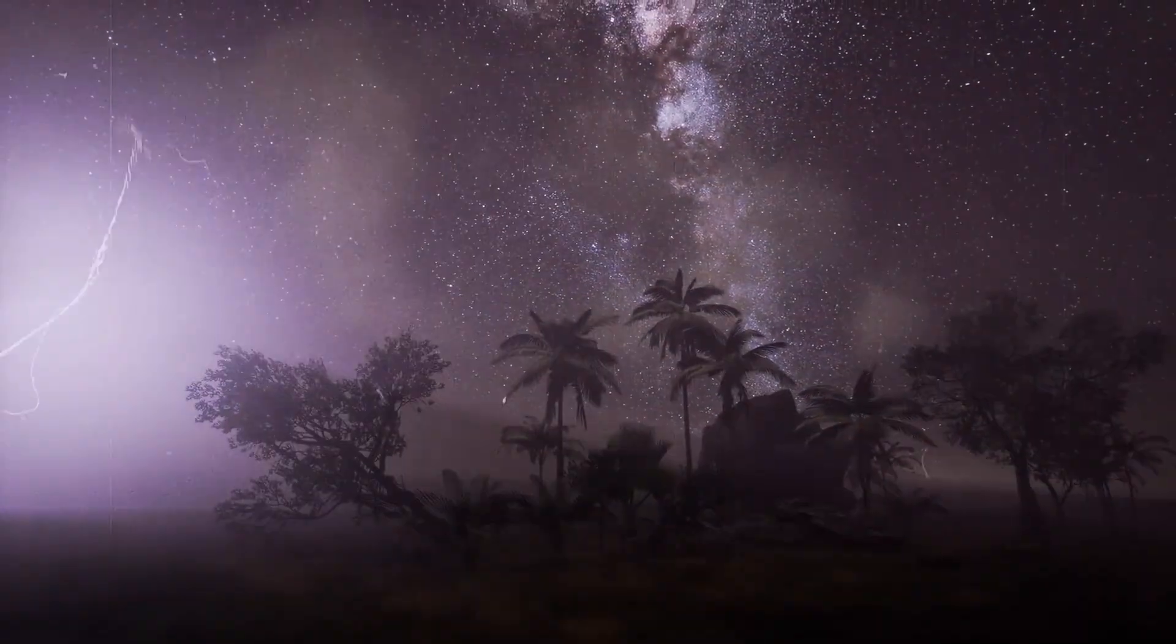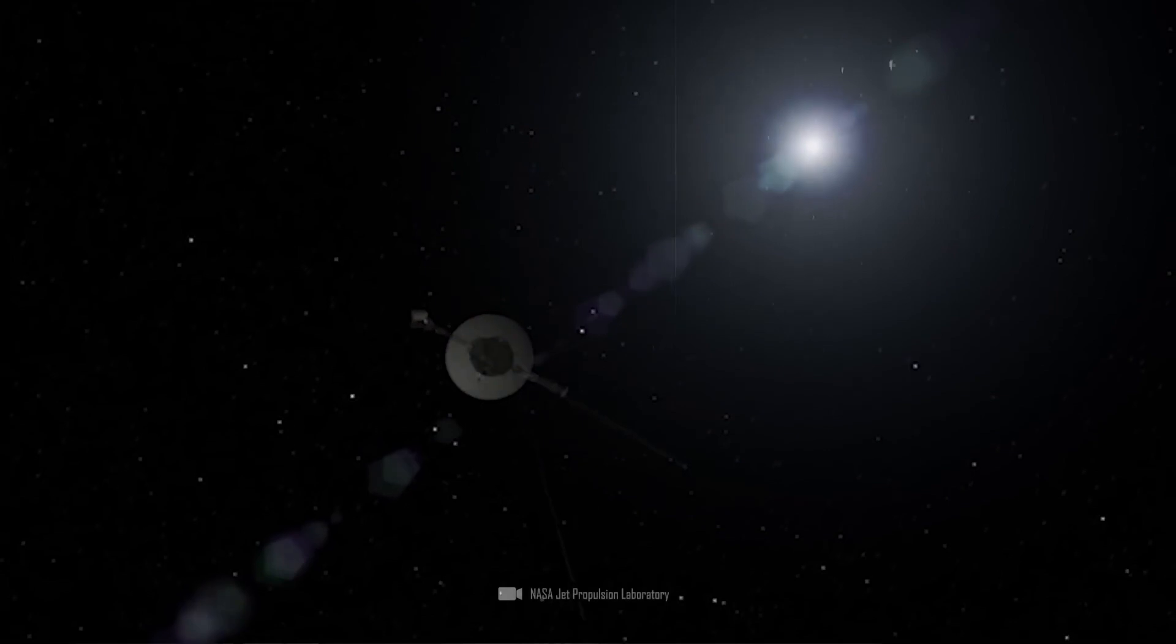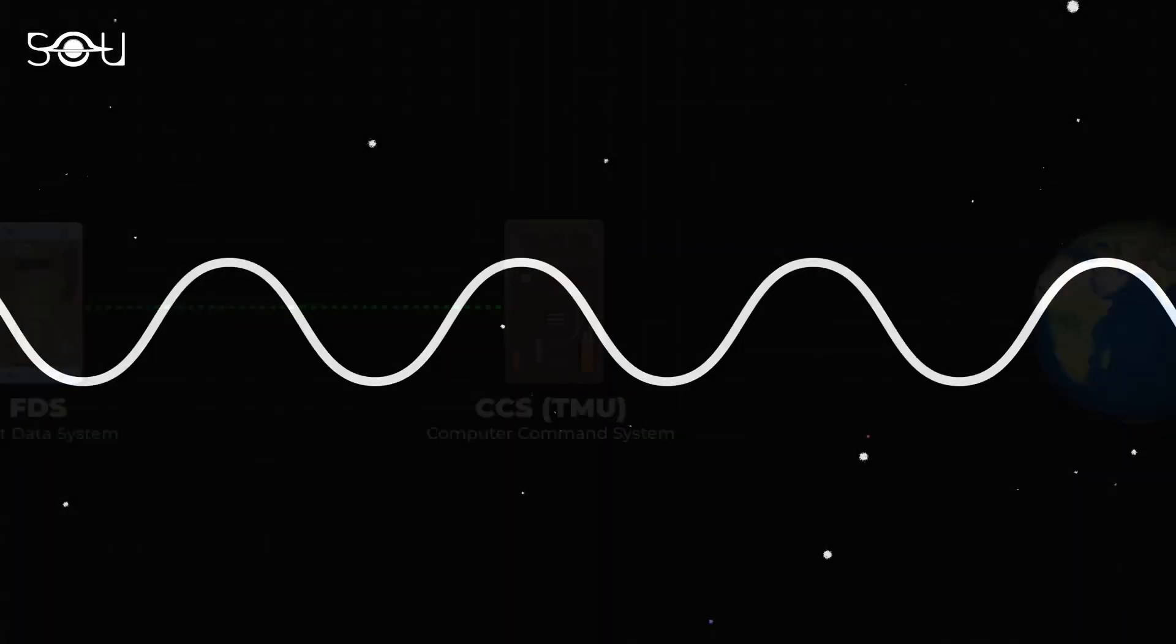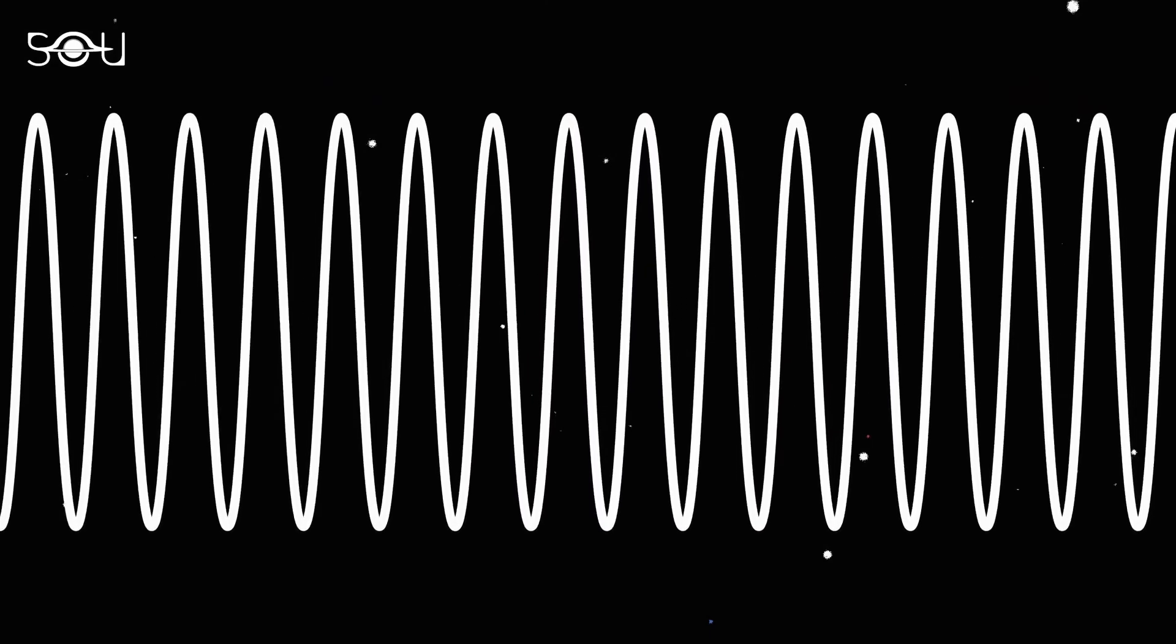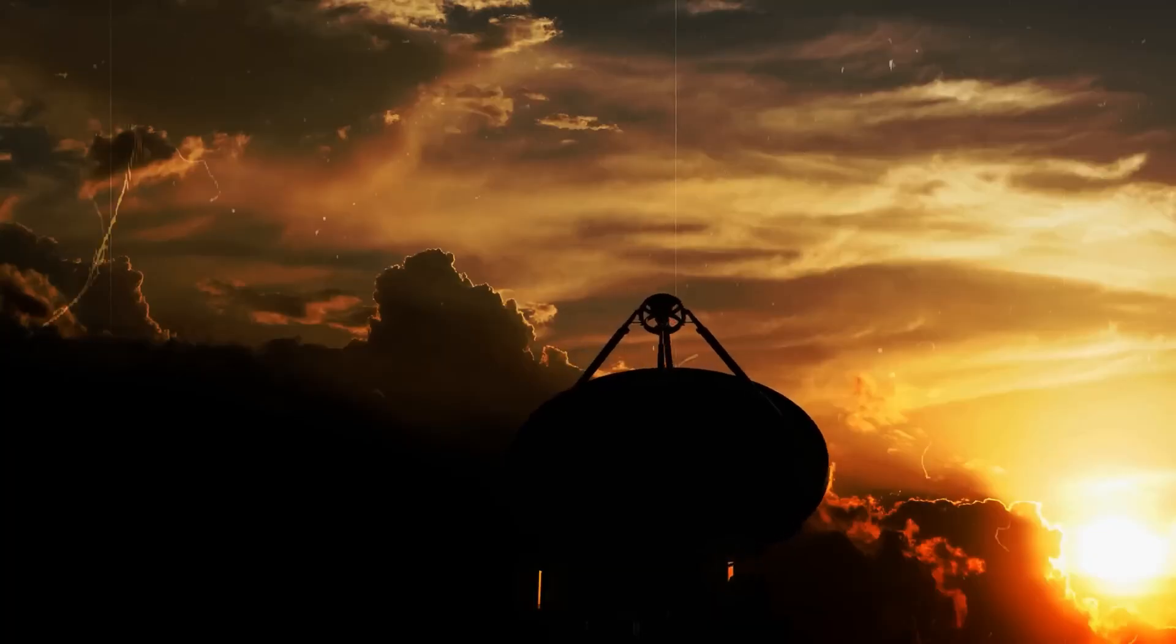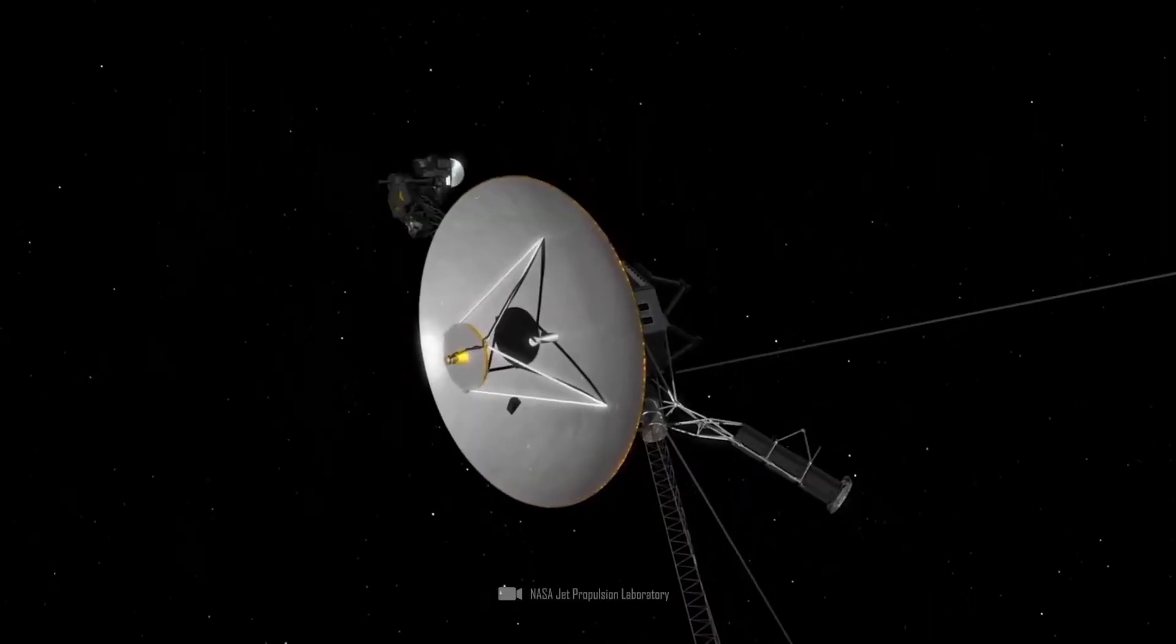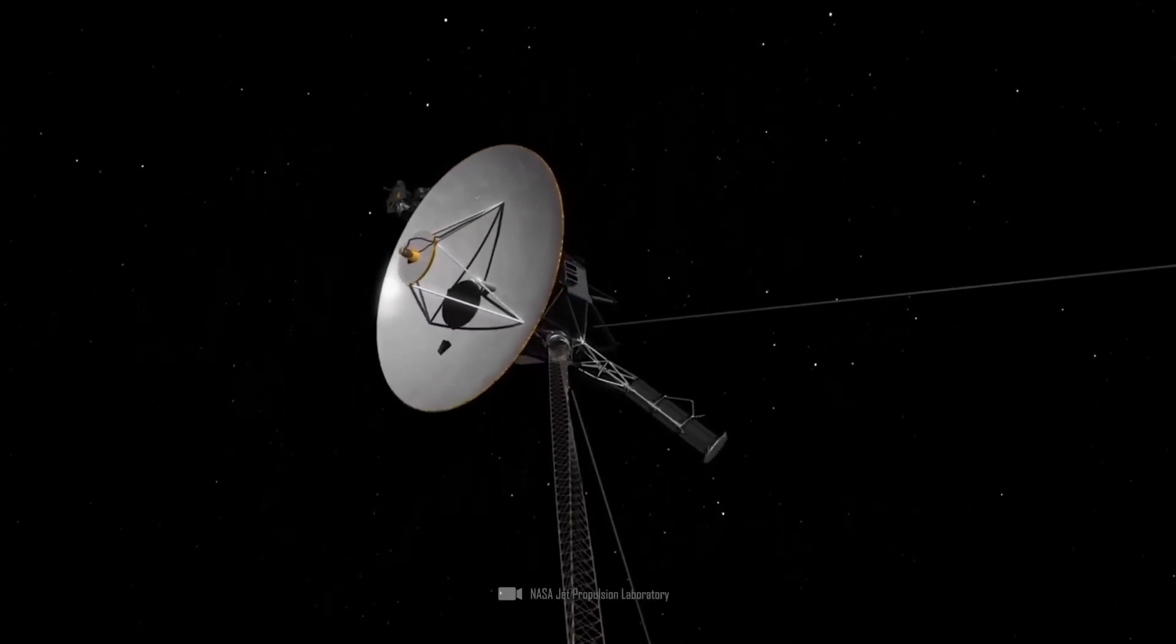NASA's Voyager 1 spacecraft has started sending comprehensible messages again after five months of gibberish. The Voyager Twitter account announced the good news with a simple yet heartening message: Hi, it's me. This comeback is a huge relief for the Voyager team at NASA who have been dealing with communication glitches for months. Given that Voyager 1 is 15 billion miles away and is the farthest human-made object in space, the successful recovery is nothing short of miraculous.